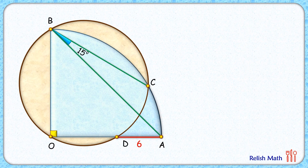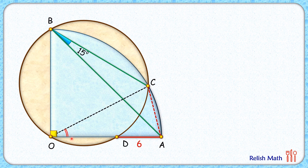Let's check this elegant solution. To start with, let's join CA. Now CA is a chord in this blue quadrant and it subtends an angle of 15 degrees at the circumference. So by the inscribed angle theorem, at the center it will subtend an angle of 30 degrees.